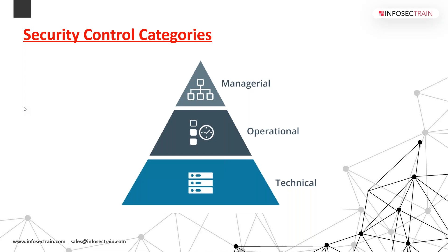In operational we implement people: security guards, training programs, security training programs, and operation controls — rather than technical controls. In managerial controls, we get oversight of the information system — for example risk identification, tools selected for security controls, and policy standards.